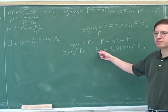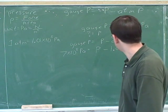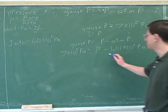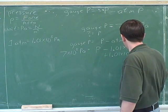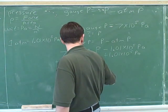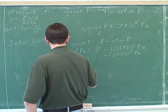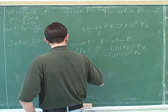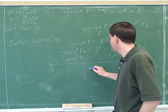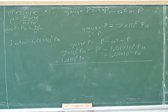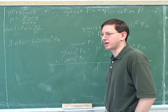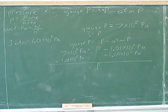Now we need to do some algebra to get P by itself. We add atmospheric pressure to both sides of the equation — the way to get rid of a subtraction is by adding. That leaves P on the right-hand side. Working out the left-hand side: 7 times 10 to the 5th plus 1.01 times 10 to the 5th gives 8.01 times 10 to the 5th.